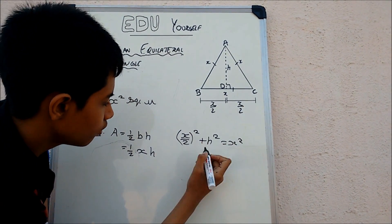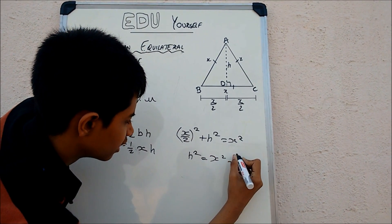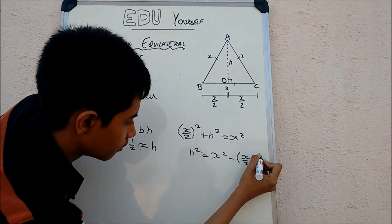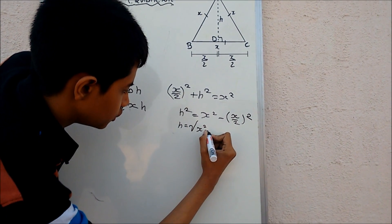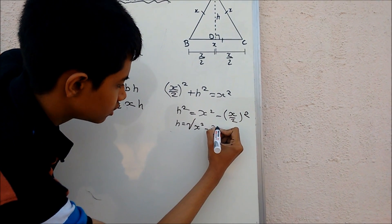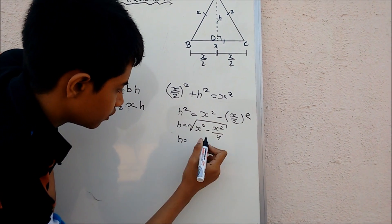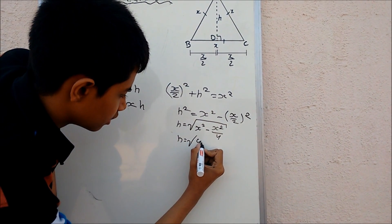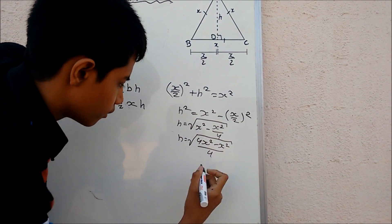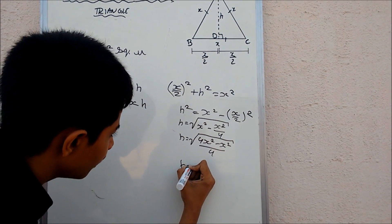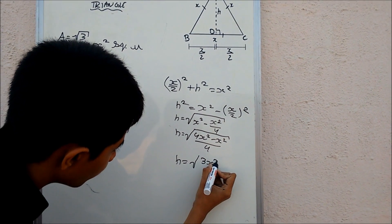Now to get h squared, it is nothing but h² equals x² minus (x/2)². And h equals the square root of x² minus x²/4. Taking the LCM, we get h equals the square root of (4x² minus x²) all over 4, which gives us h equals the square root of 3x² by 4.